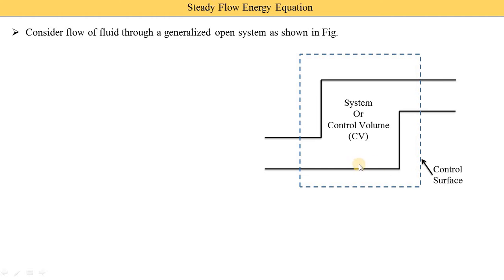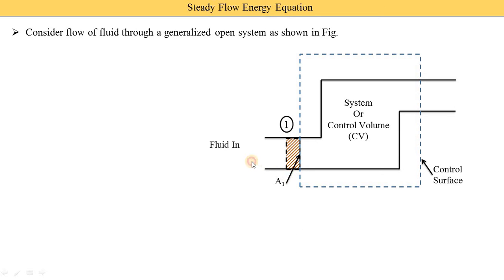This is the control surface — the portion on which we focus our study. This is section 1, which has area A1, with fluid entering. This fluid has various parameters: U1, P1, V1, C1, and H1.